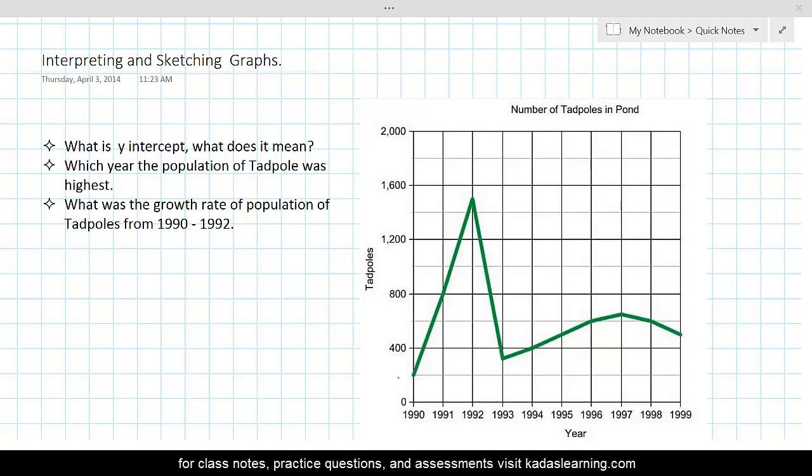Let's get started with this graph on the right-hand side of the page. The question is, what is y-intercept and what does it mean? Y-intercept means the point on vertical axis where the graph intersects the vertical axis. Let's call this as point A. If this is called point A, then coordinates would be 0, 200. So y-intercept is equal to 0, 200.